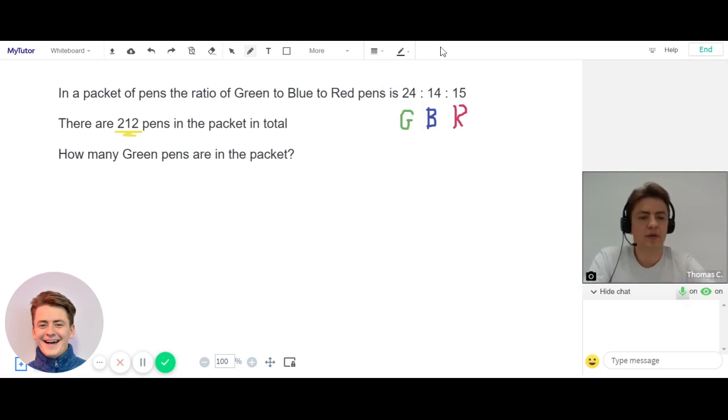So first thing we want to know is out of a collection of pens, how many green pens would there be? Ideally, this would be good to know as a fraction. Well, if we've got 24 green pens, 14 blue pens, and 15 red pens, how many pens is this? Let's add 24 plus 14 plus 15. This tells us that we've got 53 pens in total.